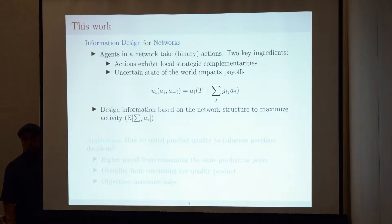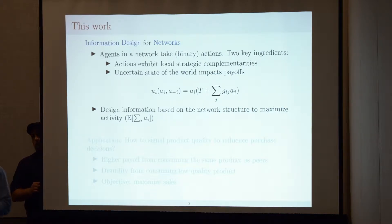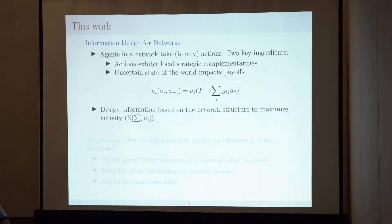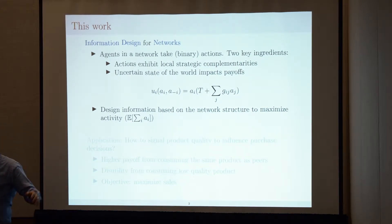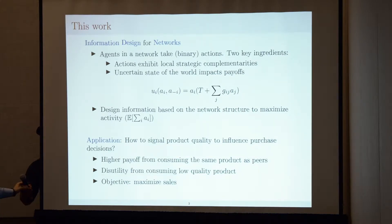In the absence of any information about the underlying state, agents will just take actions to maximize their expected payoffs. But it may be possible to design information taking into account the underlying network structure to influence agents' actions — in particular, in a way that maximizes the total expected activity. That is what this paper is about.